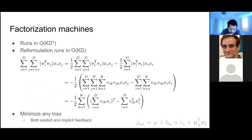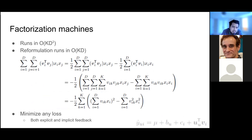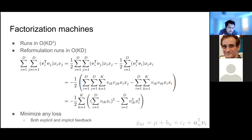The original equation runs in O(k·d²), comparing each item in d with every other. We can reformulate it to run in O(k·d) by removing pairwise comparisons. Given this formulation, we can minimize any loss for both implicit and explicit feedback, making factorization machines a very generalized model.